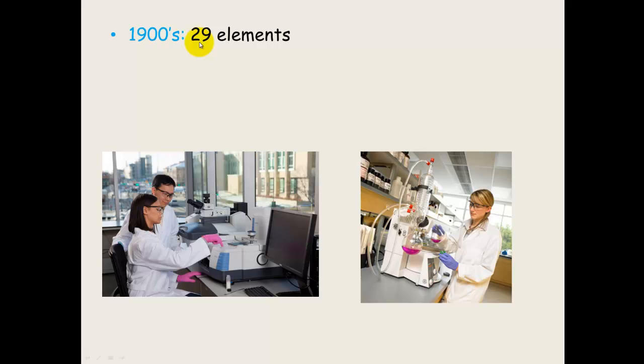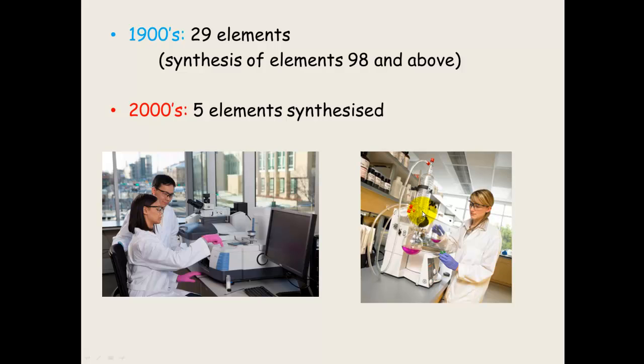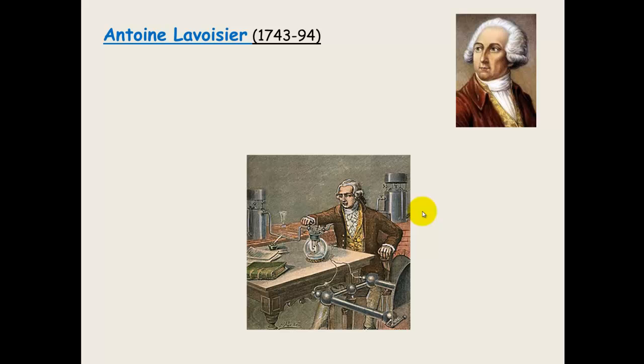In the 1900s 29 elements were discovered and this is partly because of all the technology that we've got now. We were also able to synthesize our first elements and that was 98 and above on the periodic table. And in the 2000s five more elements have been synthesized and I haven't actually updated that so that could even be more by this time. Depends on when you're watching this.